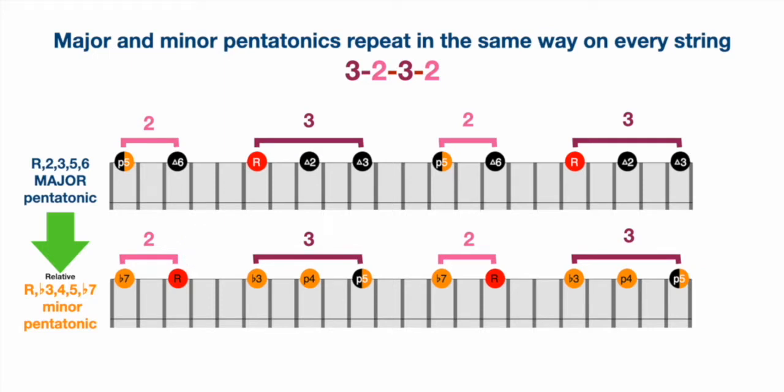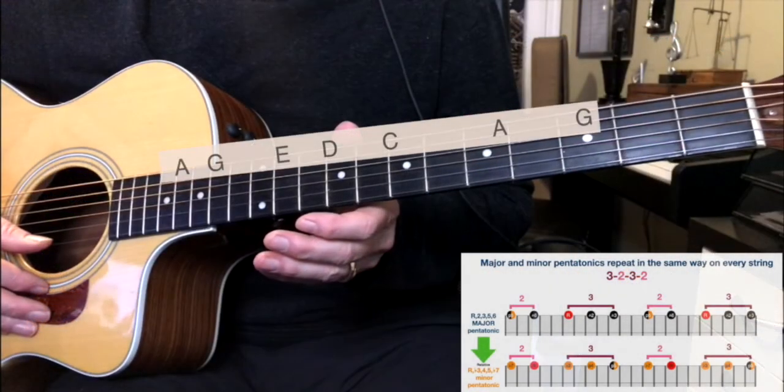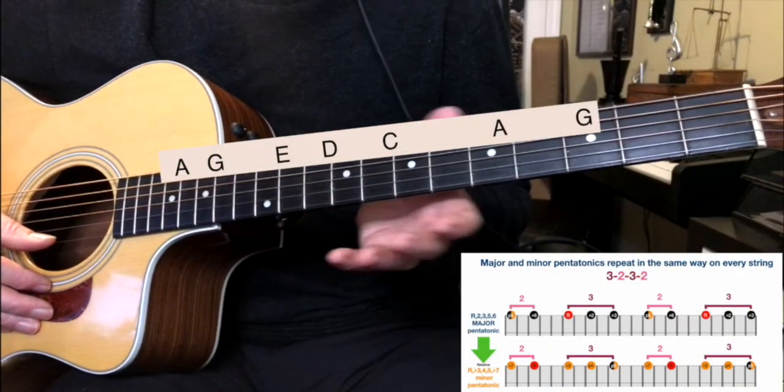If you have your root three steps down, you're now playing in a minor pentatonic scale. The relative minor is the identical notes to the major pentatonic, but the relative minor has different tones. Instead of having a root two three five six, it's a root flat three four five flat seven and so on.